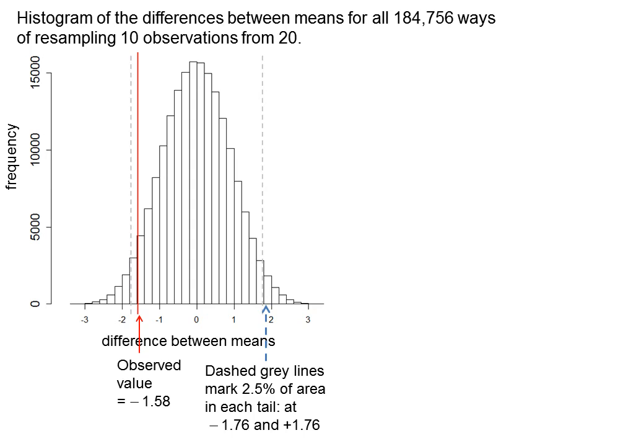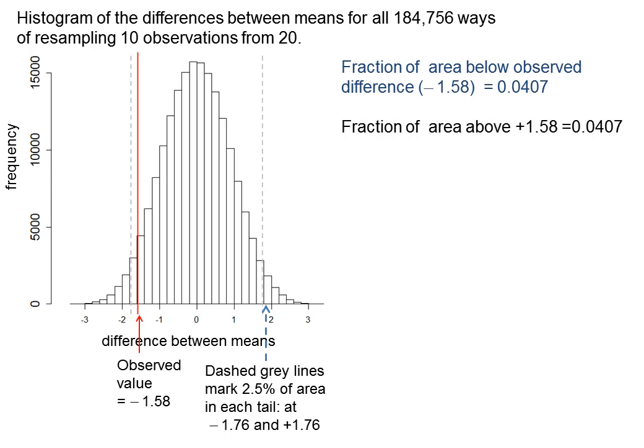So, now we instantly can get a p-value, no maths, just counting. The fraction of the area below the observed difference of minus 1.58, that's all of this area below the red line, is 4.1% of the total area. So, that's p equals 0.047. Likewise, there is 4.1% of the area above plus 1.58, just by symmetry. So, the two-tailed p-value is 0.081. There's an 8% chance of getting a difference at least as large as the one which we have observed if the null hypothesis were true. 8% is not sufficiently rare that you could, with any confidence, rule out the null hypothesis.